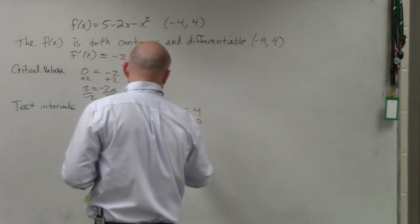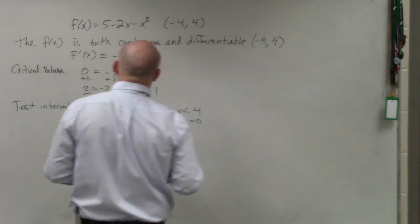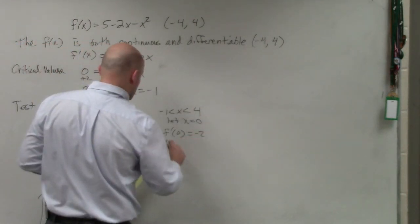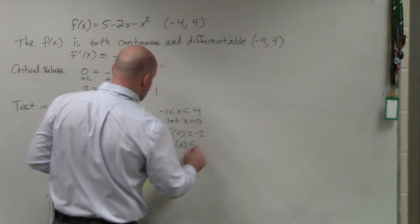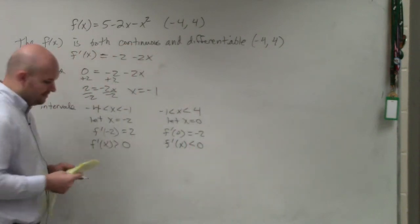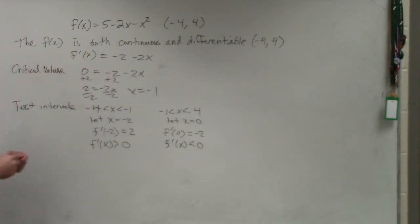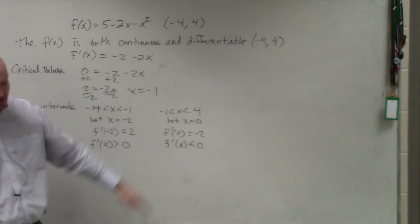And here, let's do f prime of zero. If you were to plug in zero you would get negative two, so you could say f prime of x is less than zero. Since we know that f prime of x is greater than zero and f prime of x is less than zero...